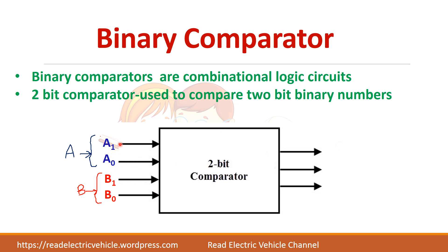So when you compare these 2 numbers, the output can be A greater than B or A equal to B, A less than B. So 3 options are available.